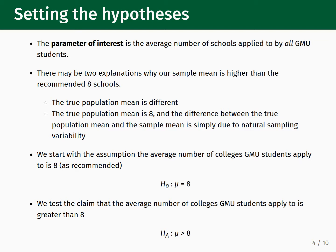Regarding our question, there may be two explanations why our sample mean is higher than the recommended 8 schools. The first possible explanation is that the true population mean is different. The second possible explanation is that the true population mean is 8, and the difference between the true population mean and the sample mean is simply due to natural sampling variability. These two possibilities, when revised slightly, will become our null and alternative hypotheses.